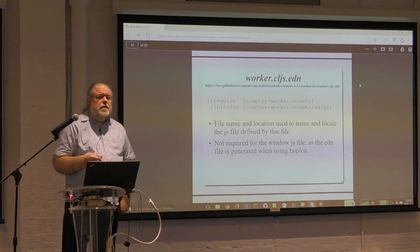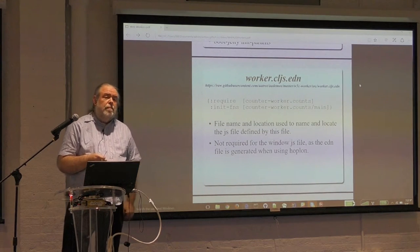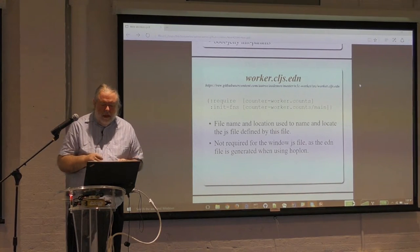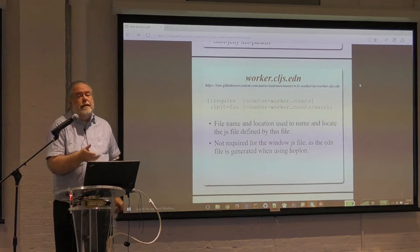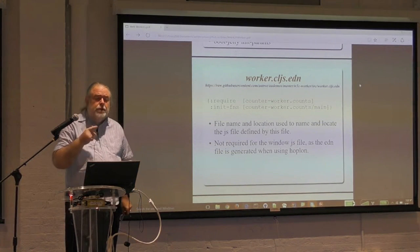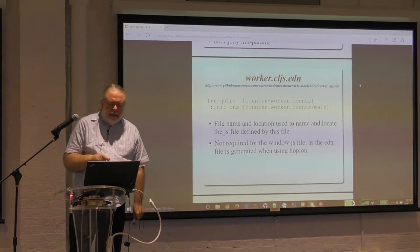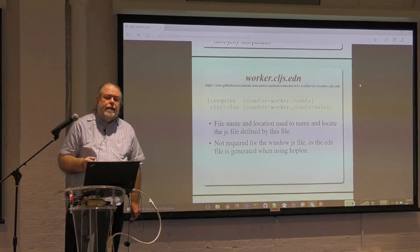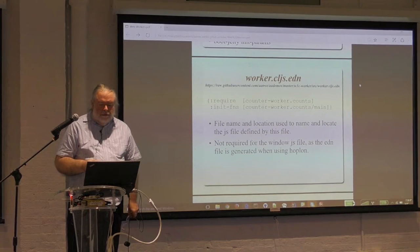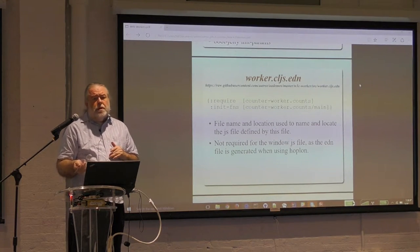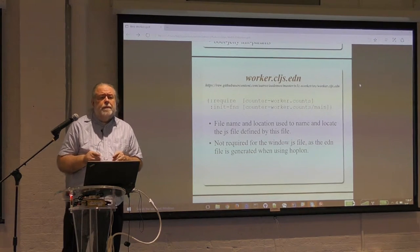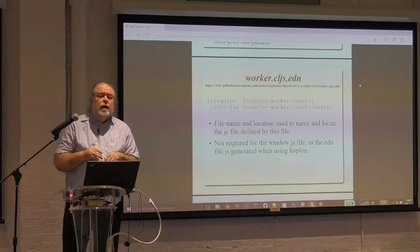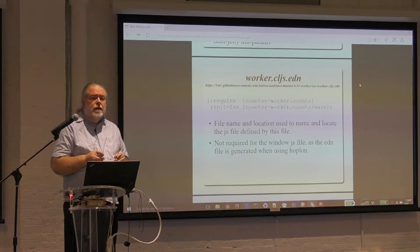Boot introduces a thing called a CLJS EDN file. You need one of these for each JavaScript file that you want to generate in your boot process. The name of the file - in this case 'worker' - is the name of the JavaScript file that you're generating. The position of the file within the hierarchy is also going to be the position where your JavaScript is located. That's how you determine the path to the JavaScript file for either your window or your worker threads. Hoplon is nice in that it generates the EDN file for you for your window JavaScript file.